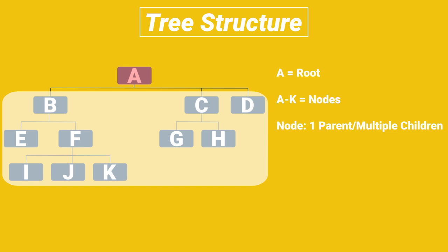Binary trees are a special type of tree where nodes can have no more than two children. Nodes that do not have any children are called leaf nodes.